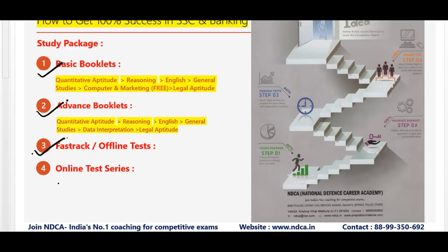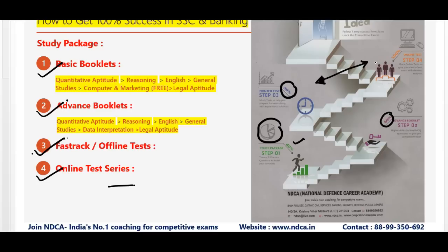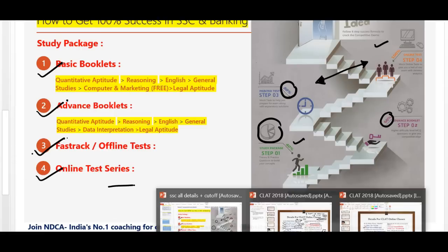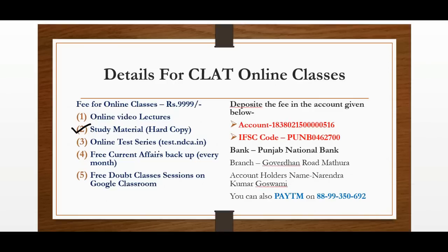Basic booklets, advanced booklets, fast track tests, and online tests will all be provided. Our success plan works like this: the study package covers 40% at the first step; advanced booklets cover 60% at the second step; printed tests cover 80%; and when you also take the online test series — because CLAT is online — you get 100% coverage. This is our success idea for CLAT 2018.